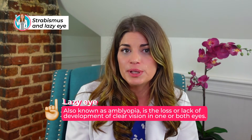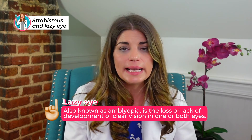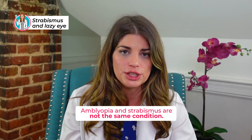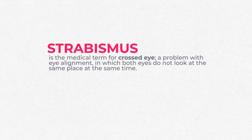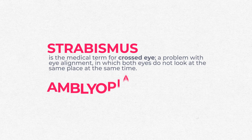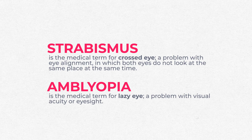Is strabismus the same as a lazy eye? Many people make the mistake of saying a person with a crossed or turned eye has a lazy eye, but lazy eye technically refers to amblyopia — when that eye does not see as well as the other. It's very possible to have a turned eye that still sees really well. Strabismus is the medical term for crossed eye, a problem with eye alignment. Amblyopia is the medical term for lazy eye, a problem with visual acuity, not alignment.